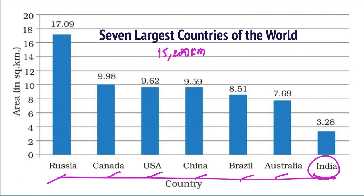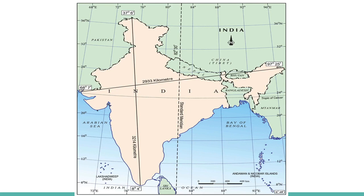The total length of the coastline of the mainland, including Andaman and Nicobar and Lakshadweep, is 7,516.6 km. India is bounded by the fold mountains in the northwest, north, and northeast. South of about 22° North latitude, it begins to taper and extends towards the Indian Ocean, dividing it into two seas: the Arabian Sea on the west and the Bay of Bengal in the east.